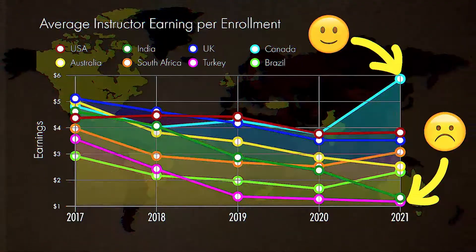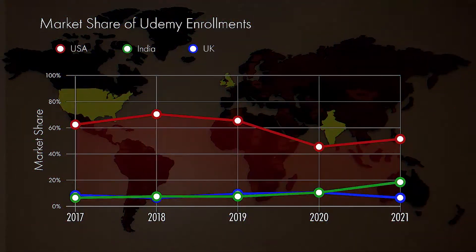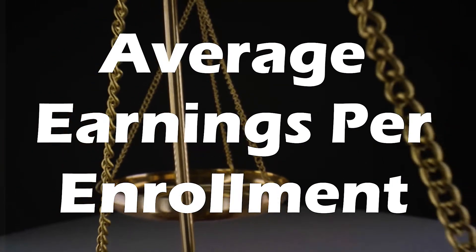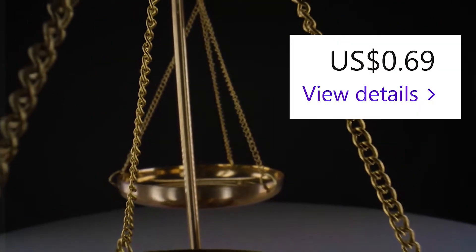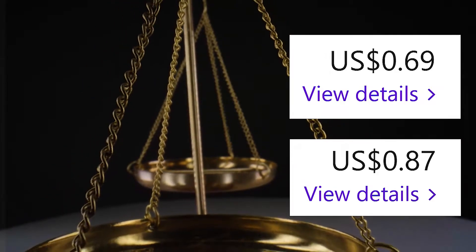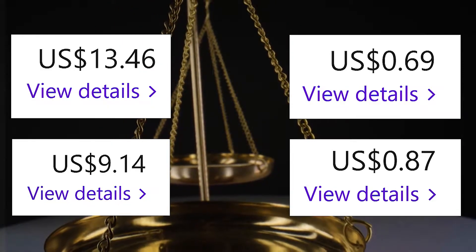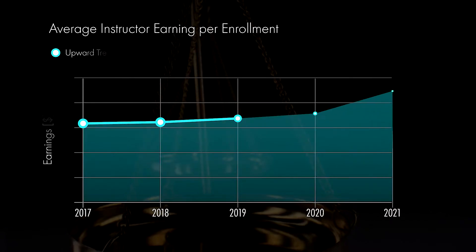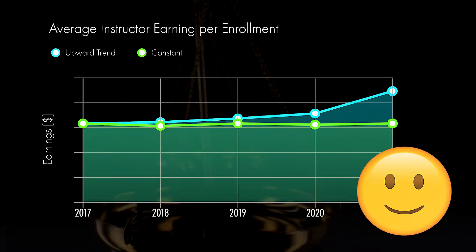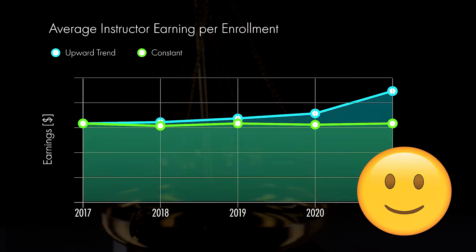So I looked pretty deep into what was going on for enrollment earnings for instructors, particularly the average instructor earnings, because low value earnings wouldn't really matter if higher value earnings balanced it out. As long as the average was going up or staying largely constant, I would be pretty satisfied.